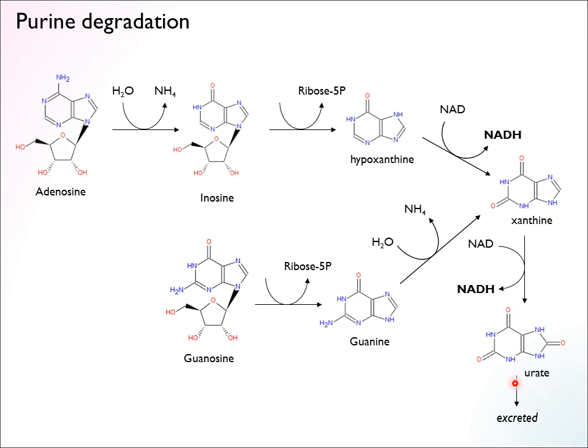In humans, urate is excreted. In some animals it's broken down further, but primates have lost those other pathways, so we stop here and this is the waste product. In the case of guanosine, it's pretty similar, but note that guanosine already has a nitrogen at that position, so it's not available for oxidation. We first get rid of the sugar — the ribose — then do a deamination to arrive at xanthine. Then we do one oxidation, one dehydrogenase step, and get one NADH out of this. Overall, for a molecule this large, there is not that much energy we can get from nucleotide degradation.